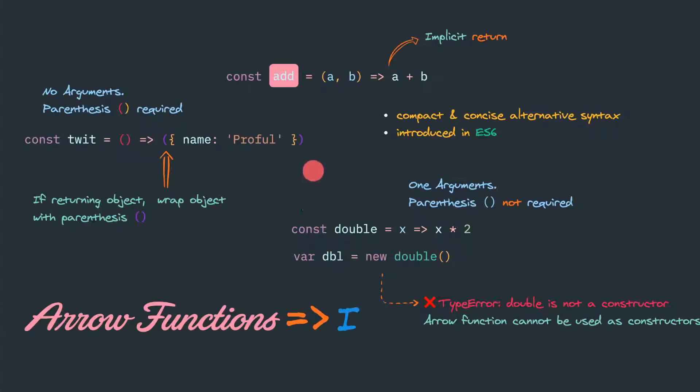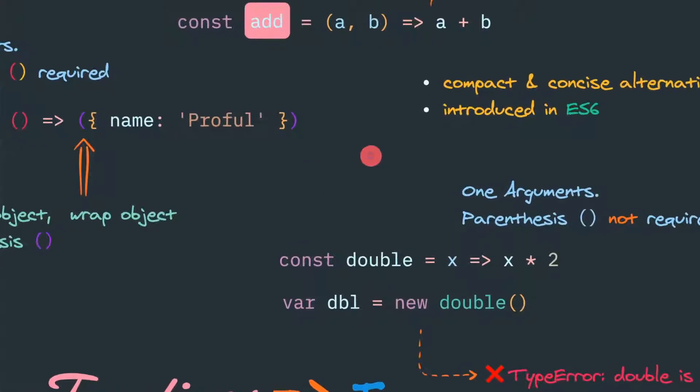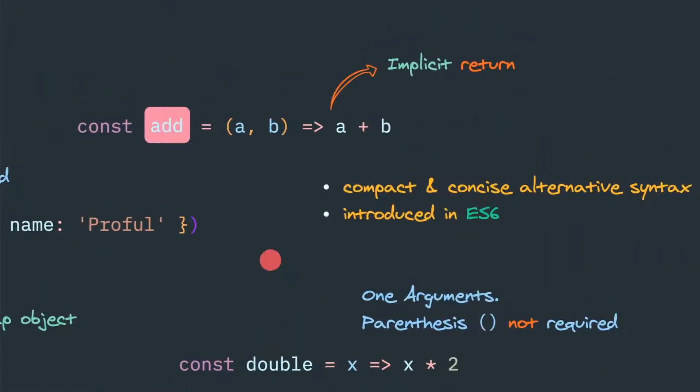Today we will discuss arrow functions. Arrow functions were introduced in ES6, which provide a compact and concise alternative syntax.